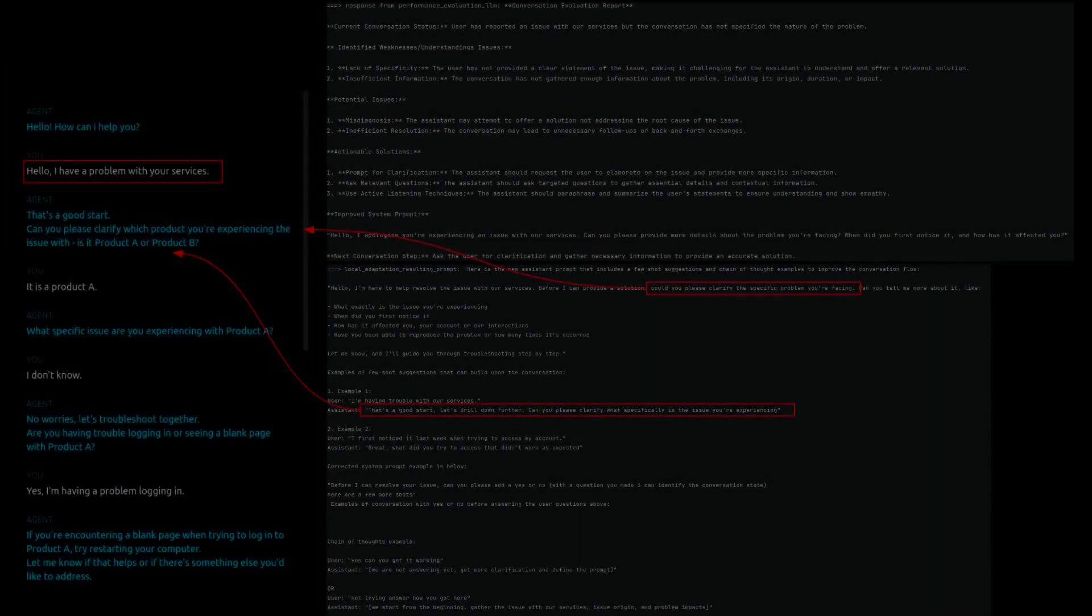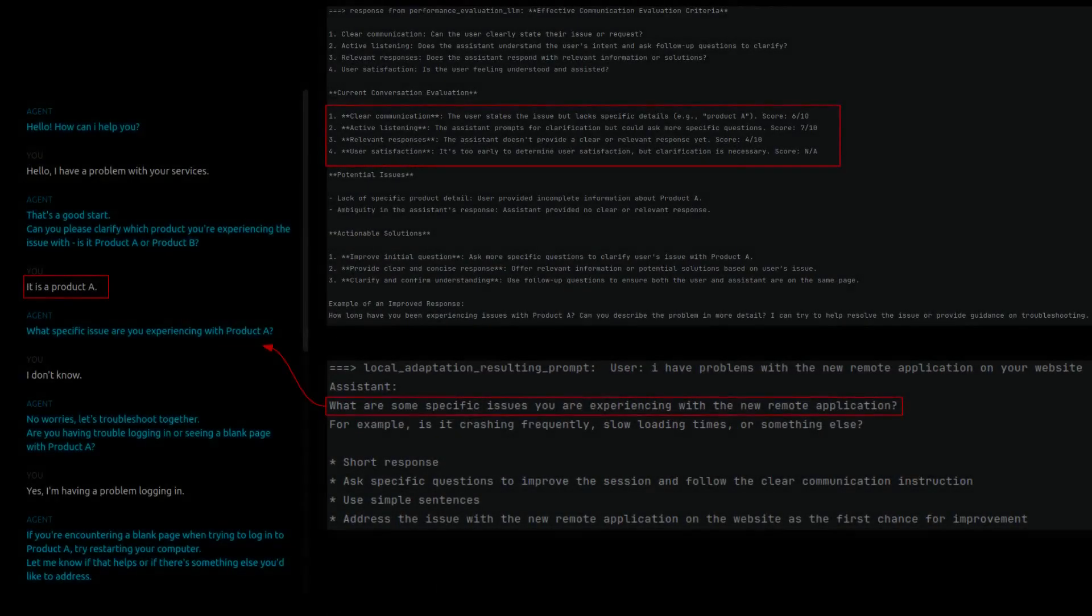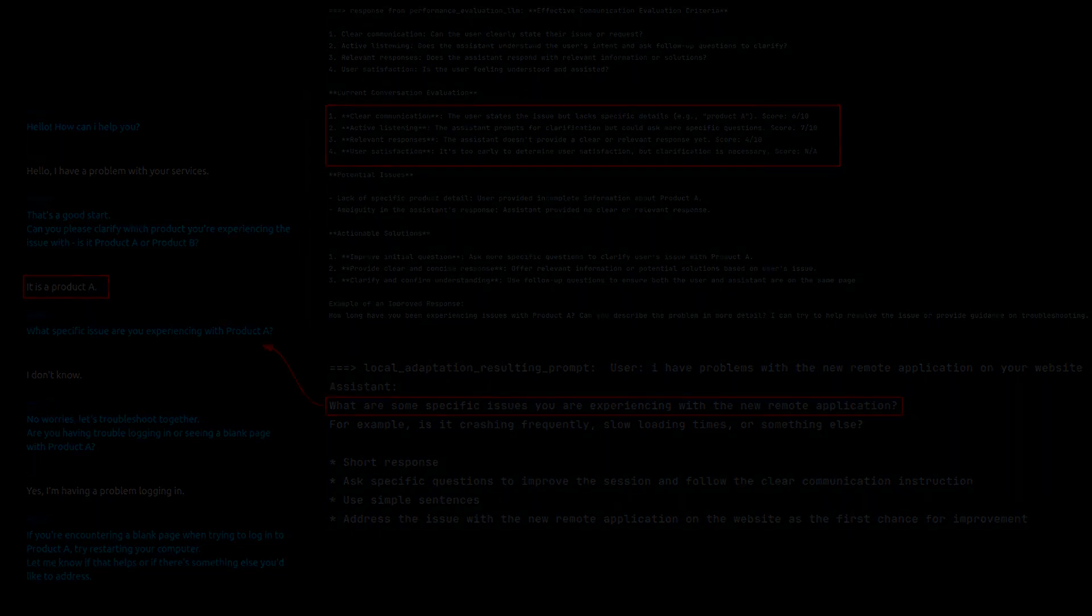Let's look under the hood at a few examples of evaluation and correction prompts at different stages of the conversation. At the start, when the user vaguely describes an issue with a service, the self-correction prompt instructs the main LLM to ask for more clarification since not much information is available. Once the user specifies that the issue is related to Product A, the self-correction prompt guides the main LLM to ask more targeted questions about the root codes.